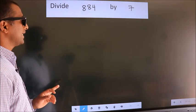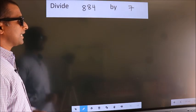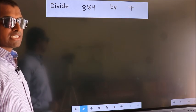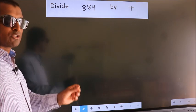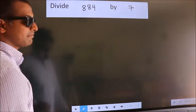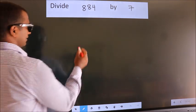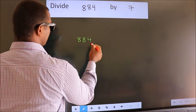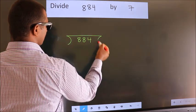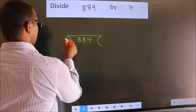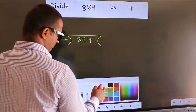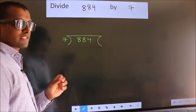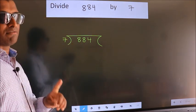Divide 884 by 7. To do this division, we should frame it in this way: 884 here, 7 here. This is your step 1.